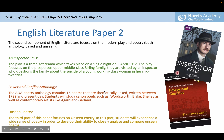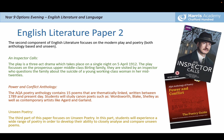With unseen poetry we are looking at methods and structural elements, just like in Power and Conflict. The key difference is that for the anthology we need to know contextual information about the poets' time period and history, whereas for unseen poetry you obviously won't have seen the poems before, so you won't know anything contextual and you are not asked to comment on it.